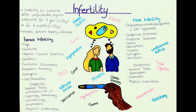In the hormone profile, the hormones FSH, LH, hCG, estrogen, prolactin, testosterone, and the thyroid hormones TSH, fT3, and fT4 are checked to find any abnormalities. Also a laparoscopy, hysterosalpingography, and genetic and immunologic examinations are possible.